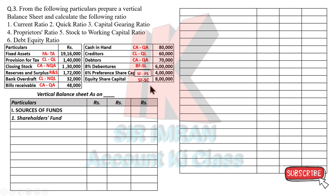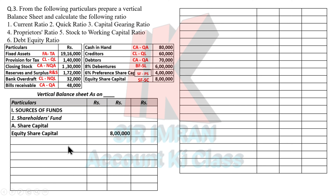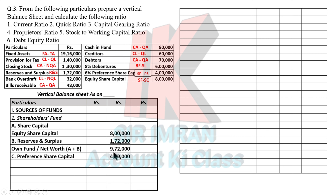Under shareholder fund, the first entry is equity share capital: 8 lakhs. Below that we write reserve and surplus: 1 lakh 72,000. Adding these gives us the net worth, own fund, or equity shareholder fund: 9 lakh 72,000. After that, the next entry is preferential capital: 4 lakhs. Adding 9 lakh 72,000 and 4 lakh gives us the proprietor fund: 13 lakh 72,000.